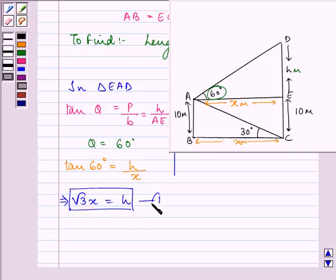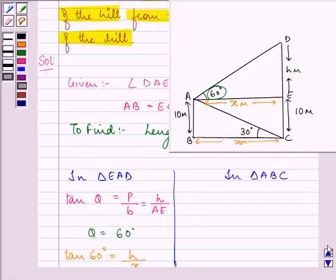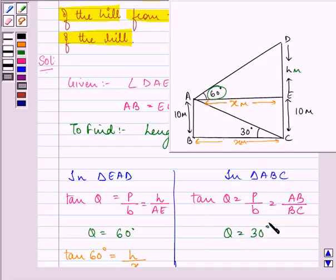Let us carry on with the second triangle that we have taken. Here also we have tan theta is equal to perpendicular upon base. Here the perpendicular is AB, whereas base is BC. Tan theta here is given to us as 30 degrees, so we have tan 30 degrees is equal to AB, that is 10 meters, divided by BC that we have taken as X meters.